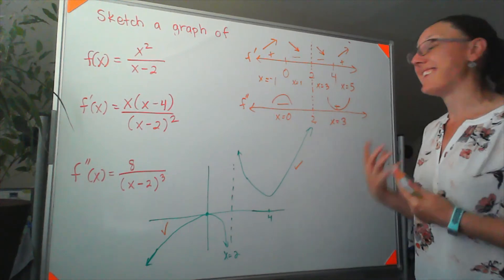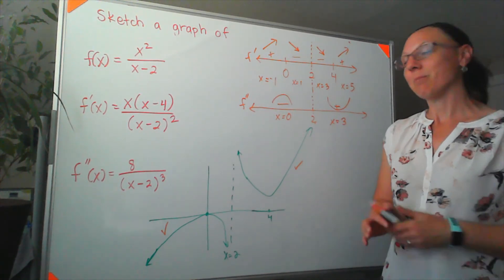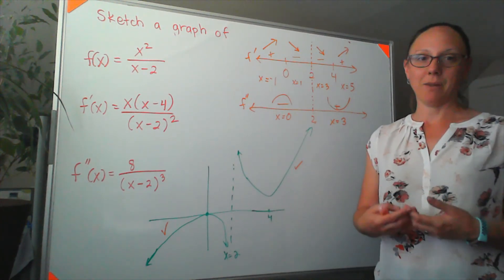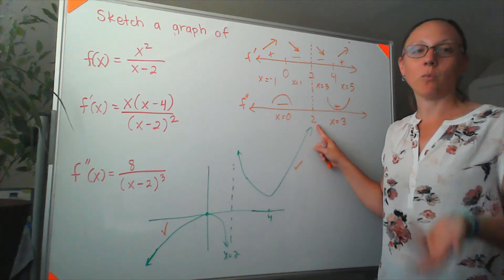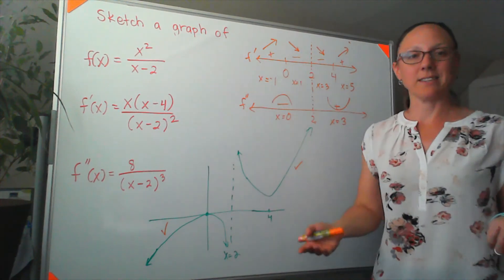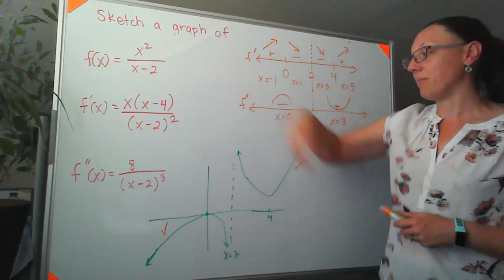By the way, 2 is not an inflection point. It can't be an inflection point because it's a vertical asymptote. And point implies that there is a point on the graph there. Meaning, if we tried to plug in the x value of 2, we should get a y value back if it's an inflection point. And we don't because it's not in the domain. So that's my complete graph for this. We'll see you next time. Thank you.